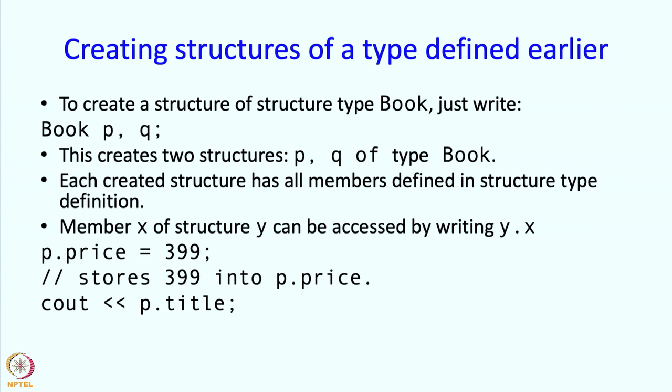Now we can print it if you wish. So if you write Cout P.title or Cout P.price, whatever the contents of these members or these member variables are will be printed.